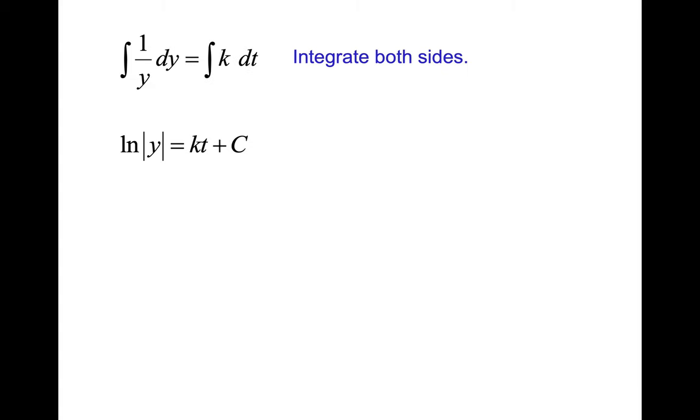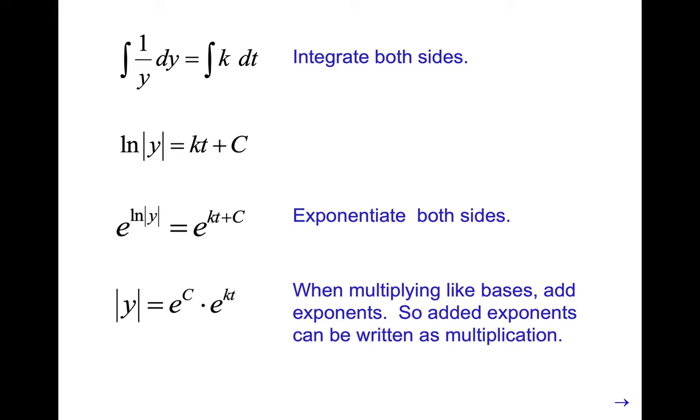So next, we need to solve for y, so we need to undo natural log by exponentiating with base e on both sides. So then we get the absolute value of y equals, and then they use that rule where they split it apart. So remember when you're multiplying with like bases you add the exponents, so we're just going the other way. And they chose to put e to the c first because that's a constant.